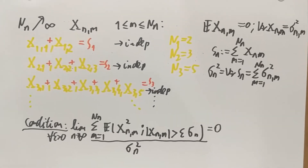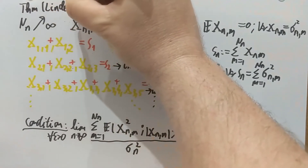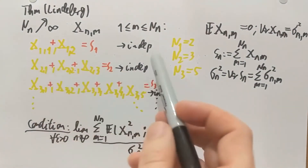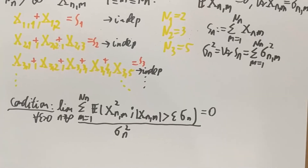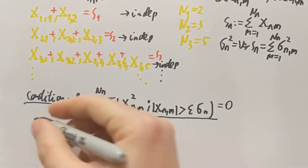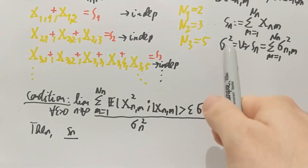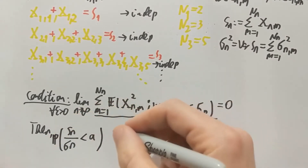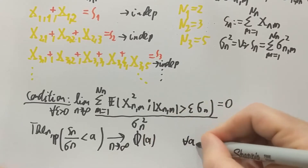This is the Lindeberg theorem. Under this condition — the main point being that we have a sequence of independent random variables added up that don't have the same distribution — with the Lindeberg condition, we have a CLT for S_n. The conclusion is that S_n divided by the standard deviation σ_n converges weakly to the standard normal: the probability that S_n / σ_n is less than a converges to the standard normal CDF, for every a.